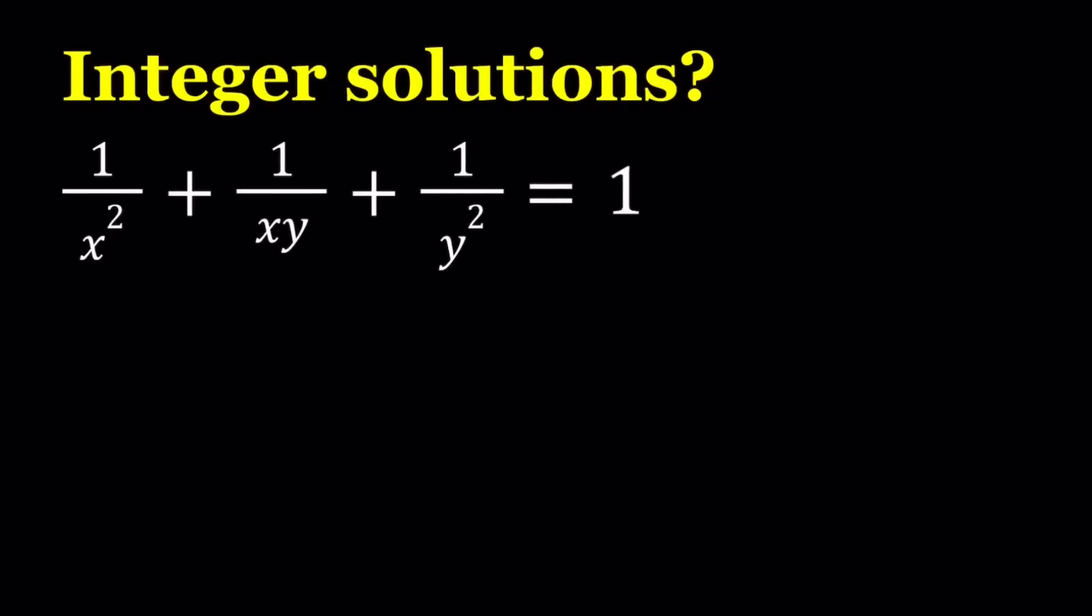Hello everyone, in this video we're going to be looking for integer solutions to an equation. We have 1 over x squared plus 1 over xy plus 1 over y squared equals 1, and x and y are integers.